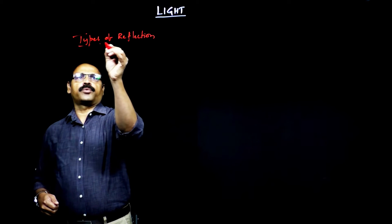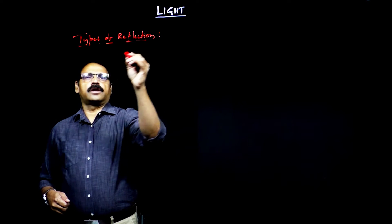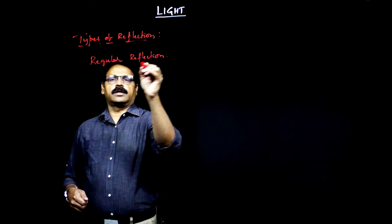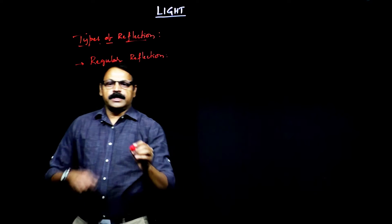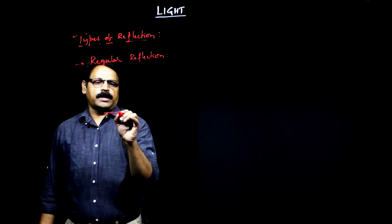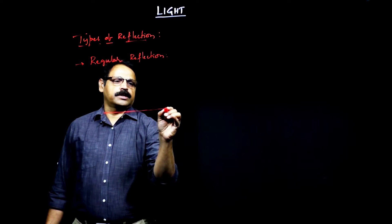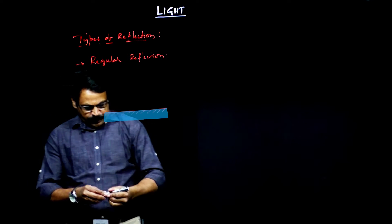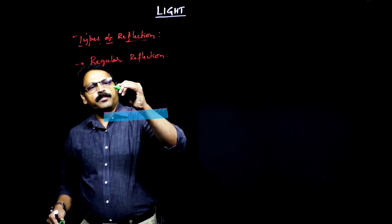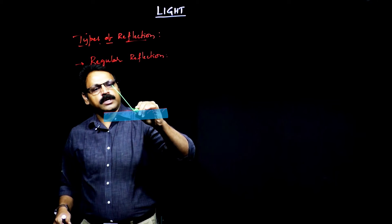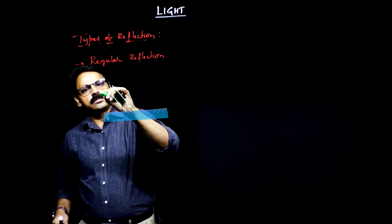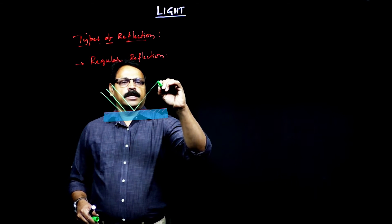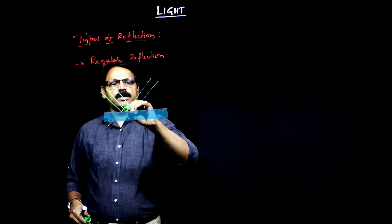Here you need to remember one point. The very first type we look at is regular reflection. Regular reflection is one where, considering a mirror surface, a parallel beam of light falls on to it. So let us say parallel rays are falling here — this is one ray, the second ray, and the third ray, which are parallel. These are the incident rays. Now if they are reflected in such a way that the reflected rays are also parallel.